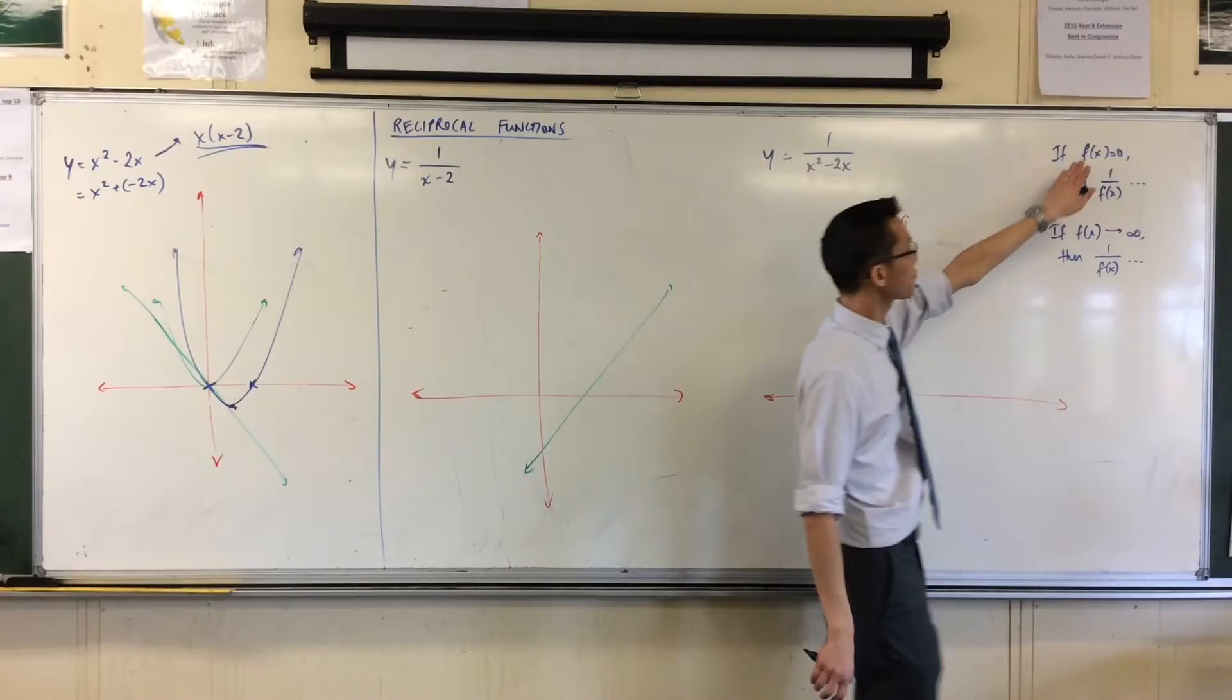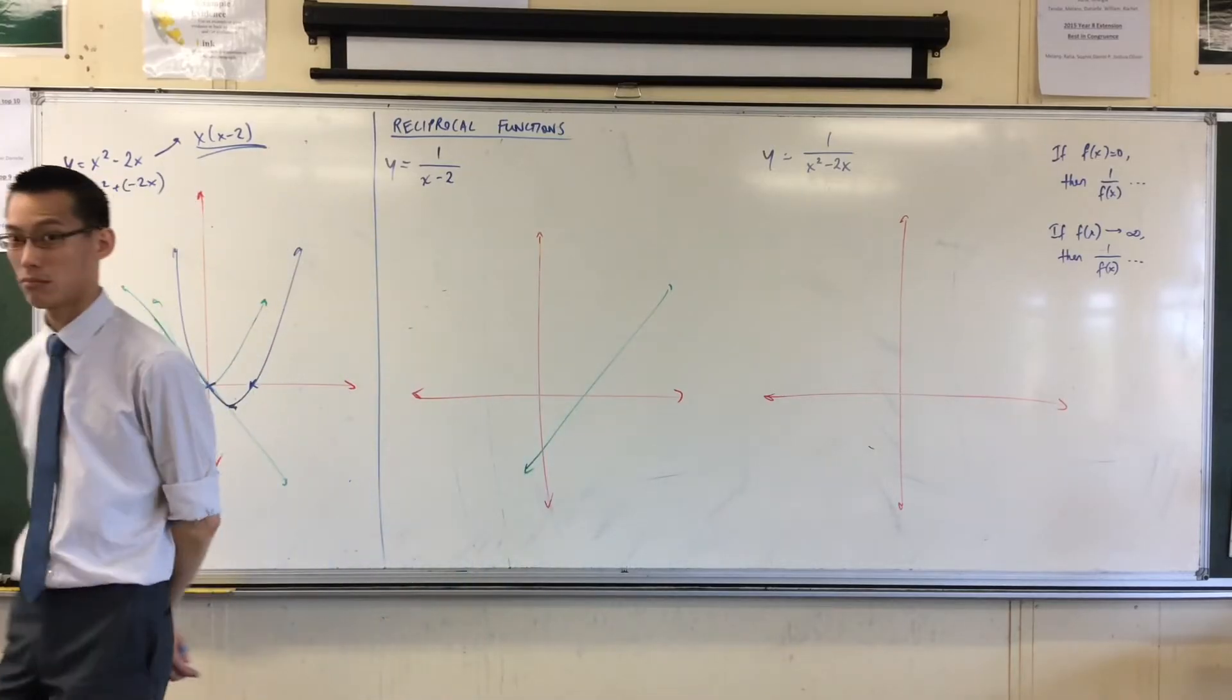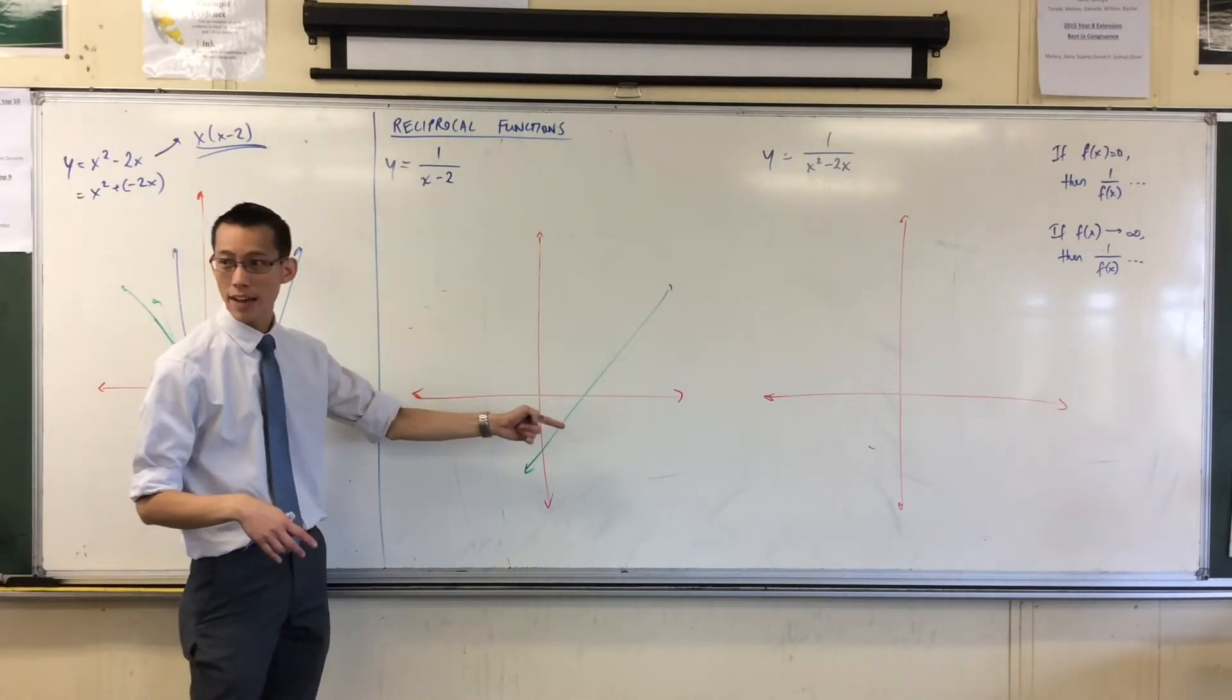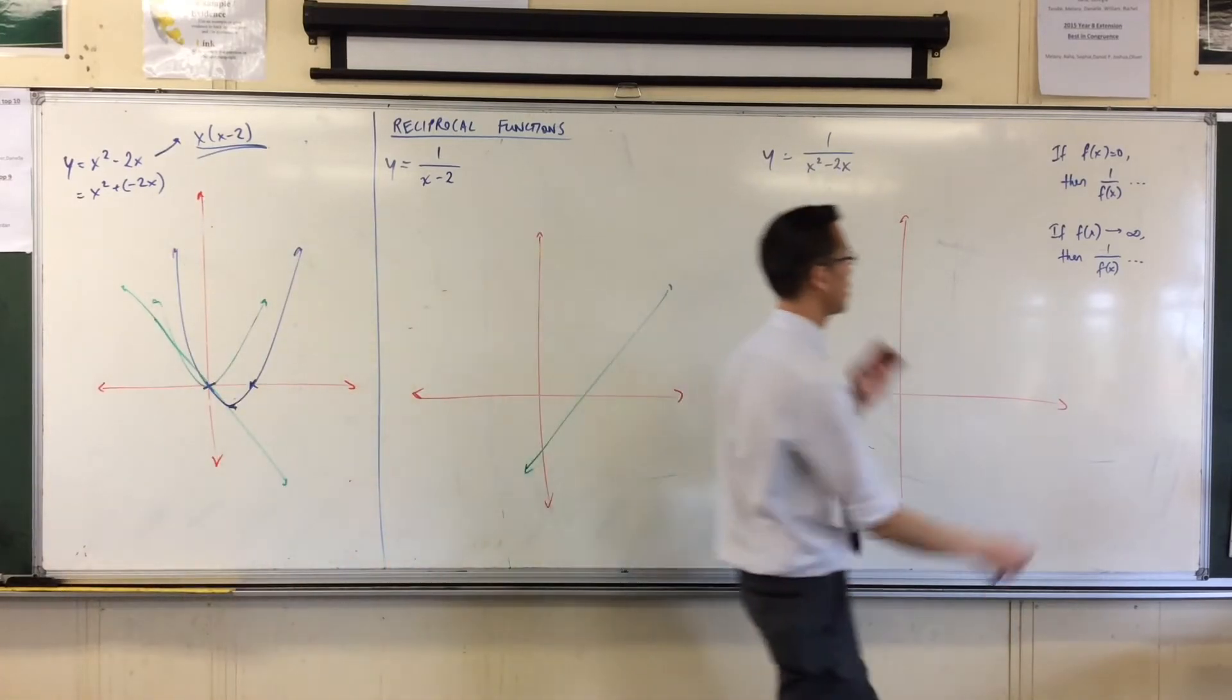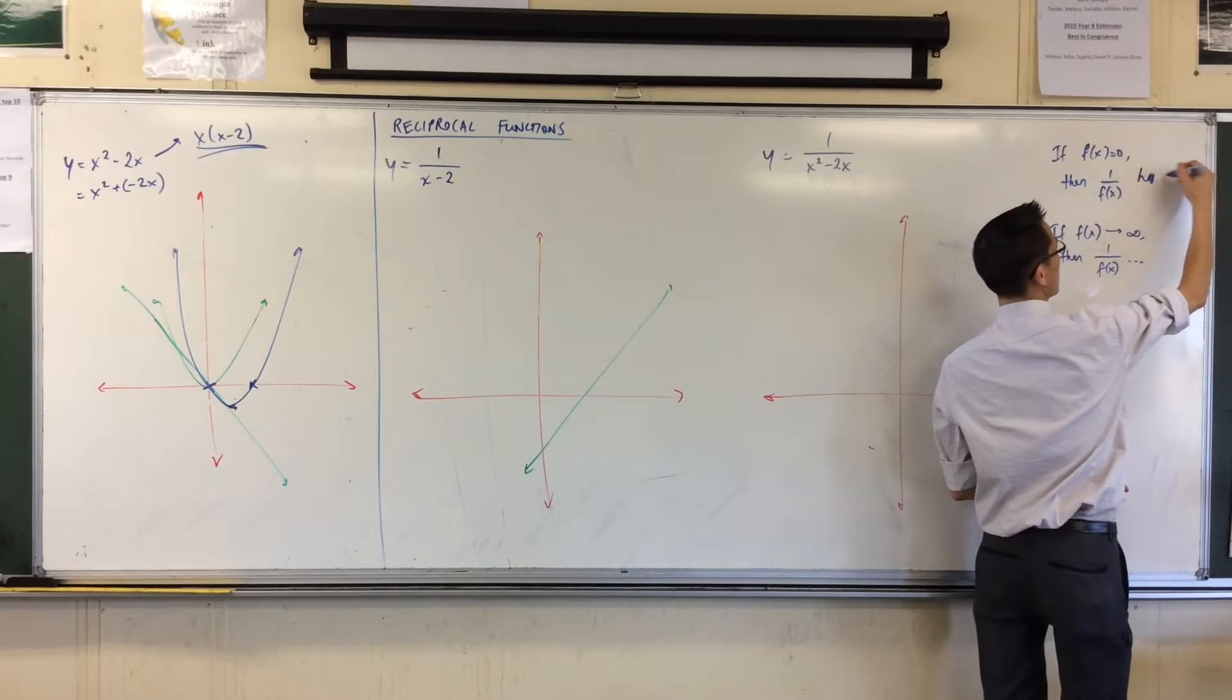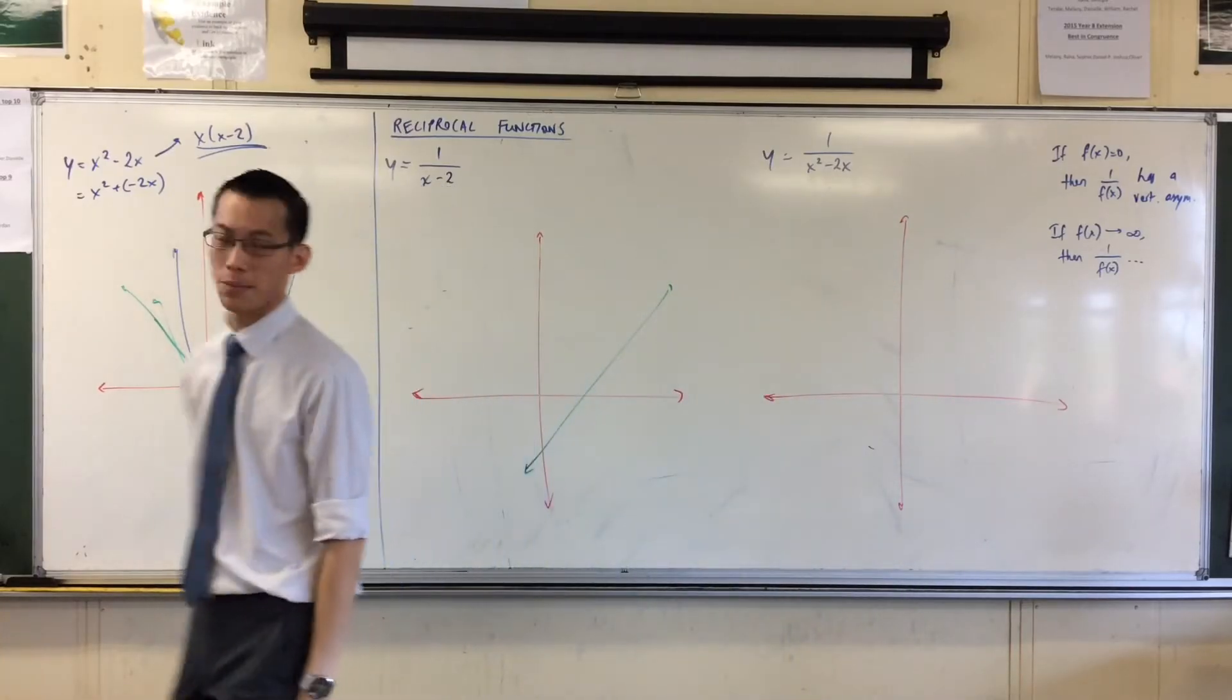So, firstly, if I have a function and I know it's equal to zero, then what will happen to its reciprocal? Well, it'll be the reciprocal of zero which doesn't exist. Now, what that corresponds to on our graphs is you're pretty much going to expect a vertical asymptote. So if you've got a function at zero at a particular point, then its reciprocal has a vertical asymptote. They're going to coincide at that particular point where it's zero.